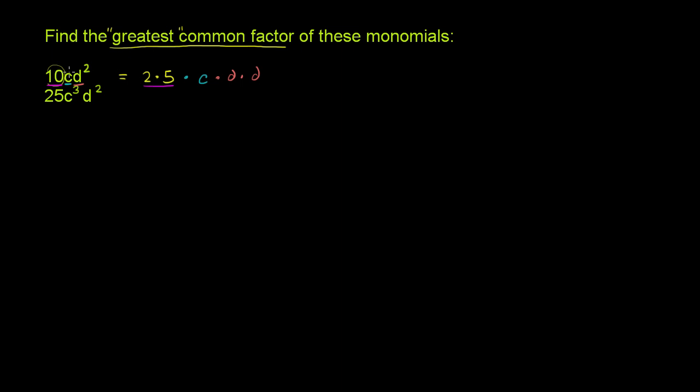This is what I mean by writing this monomial essentially as the product of its constituents. For the numeric part, the constituents are the prime factors. And for the rest of it, we're just expanding out the exponents. Now let's do that for 25c³d².